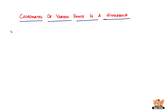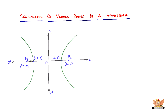In this video, let us look at the coordinates of various points in a hyperbola. Here are the various coordinates that exist in a hyperbola. The major coordinates would be the two foci and the two vertices.